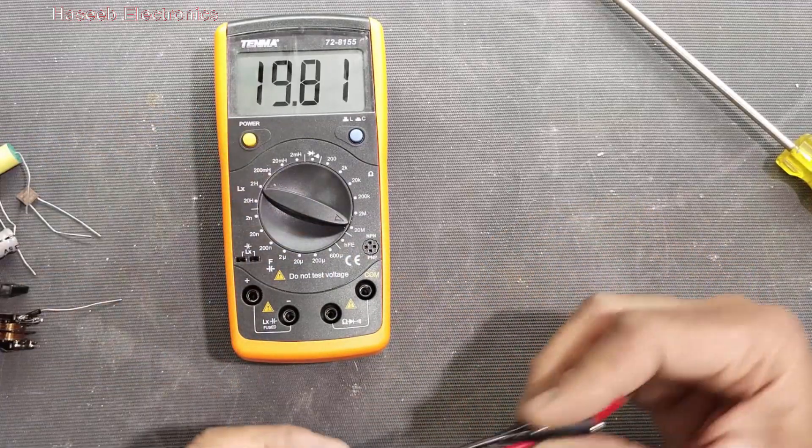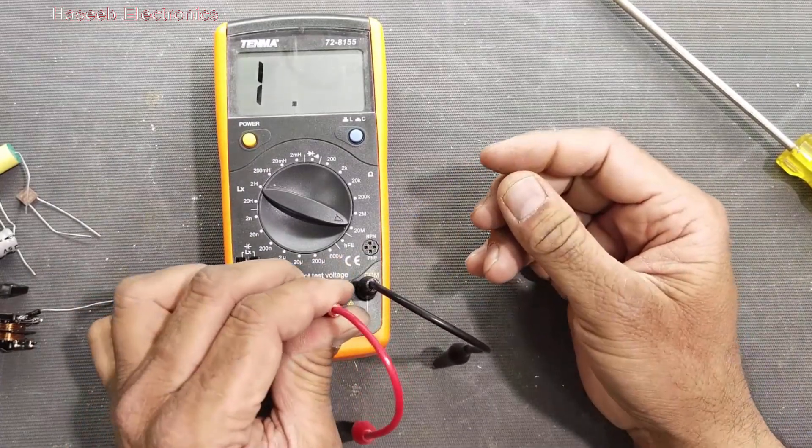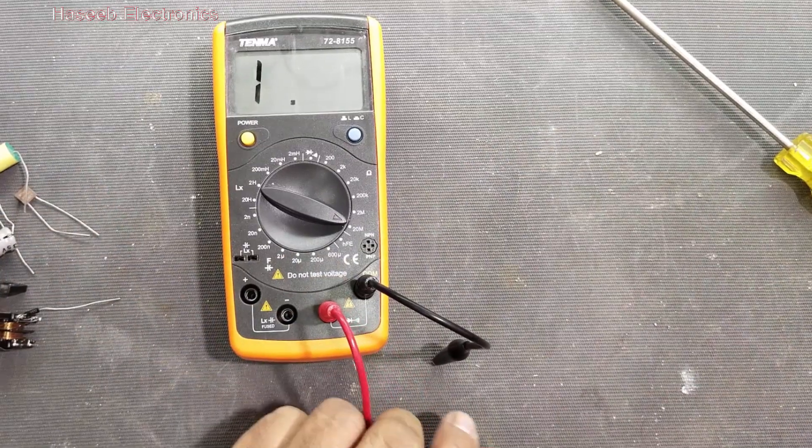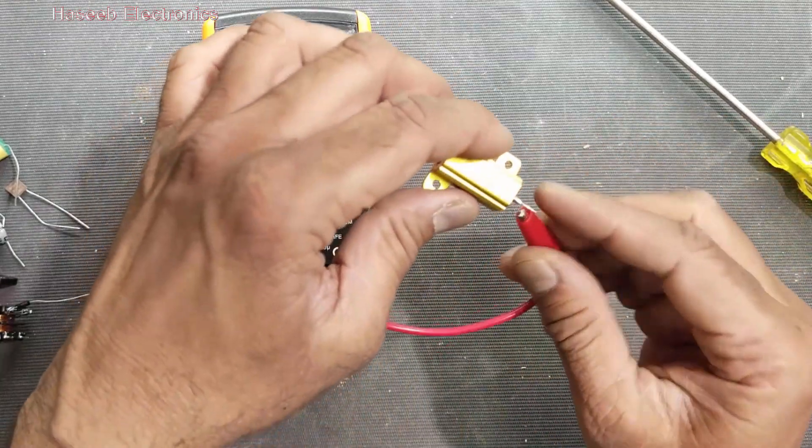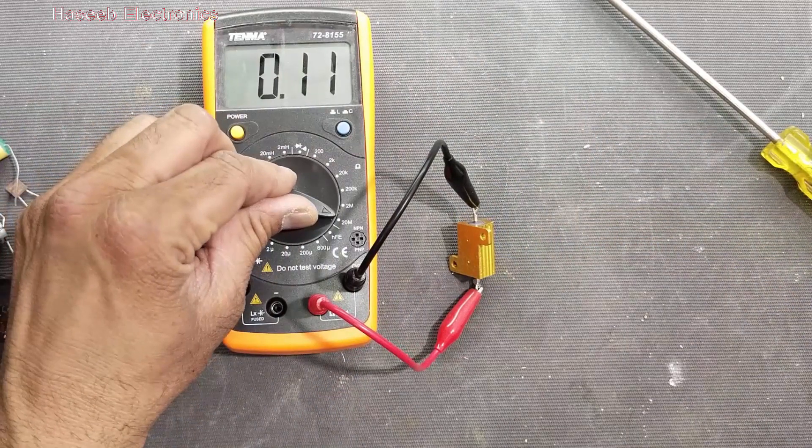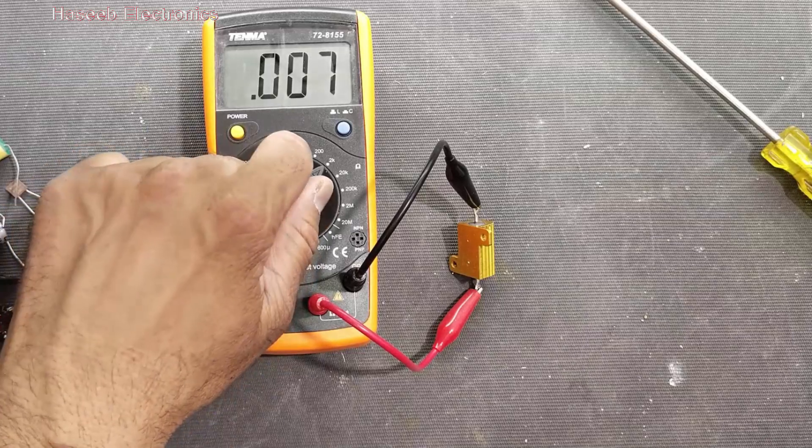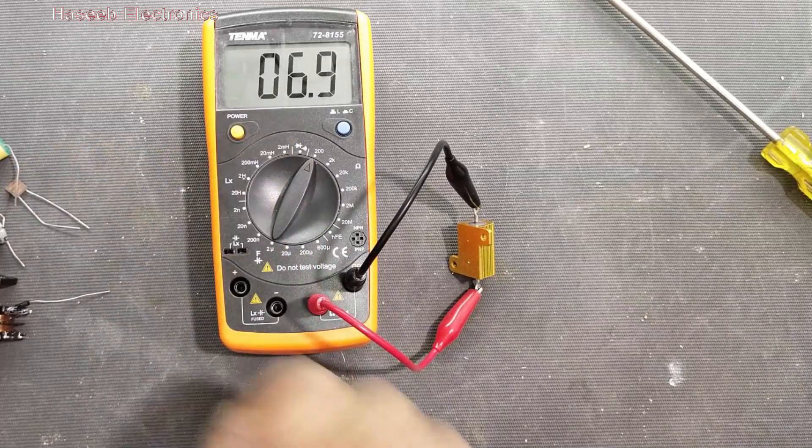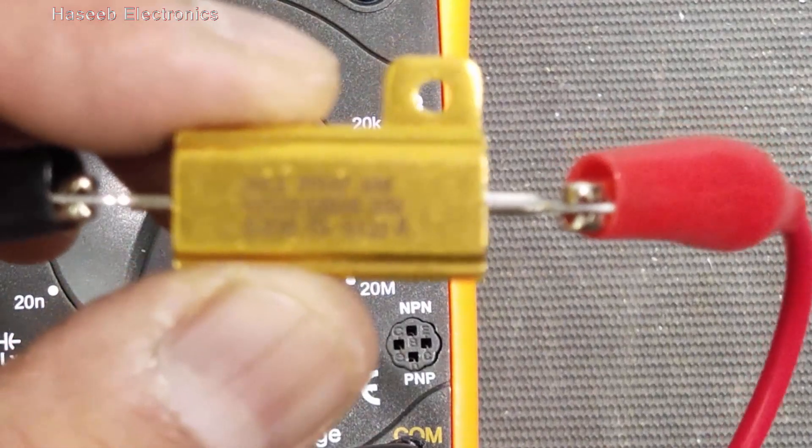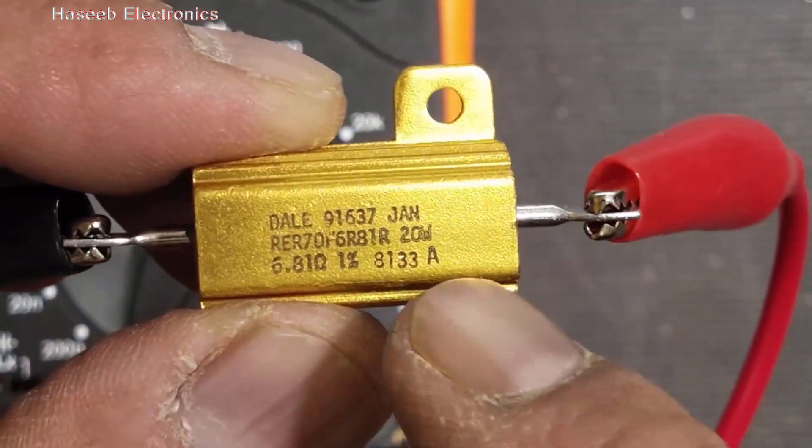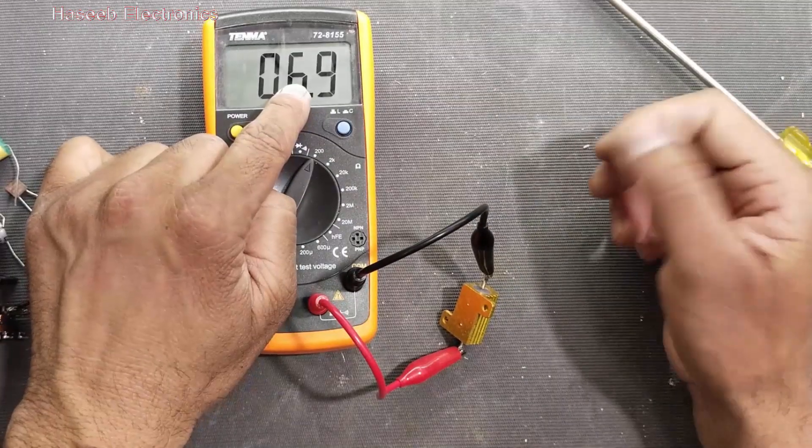Then we have resistor. For resistance measurement, we have to connect common lead here, positive lead here. And I have this 6.8 ohm resistance. It is measuring 6.9 because it is 6.81 ohm, 6.81 ohm resistance. So it is measuring 6.9, that is exactly within the range.